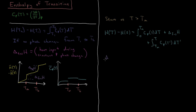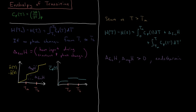Typically, delta_fus H and delta_vap H are greater than zero, because you generally have to overcome intermolecular forces keeping the molecules together. So these are generally endothermic processes — they absorb heat in order to undergo the phase transition. For example, if you hold a piece of ice in your hand, your hand gets cold because the ice is pulling heat from your hand into itself, absorbing that heat to overcome its enthalpy of fusion so it can melt and become water.